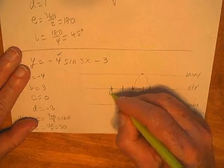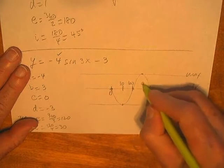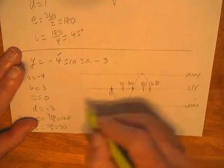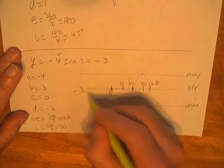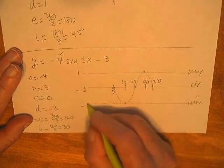I'm going to start at zero, I'm going up by 30. We got all those. Negative 3 is the center line, up 4, down 4.